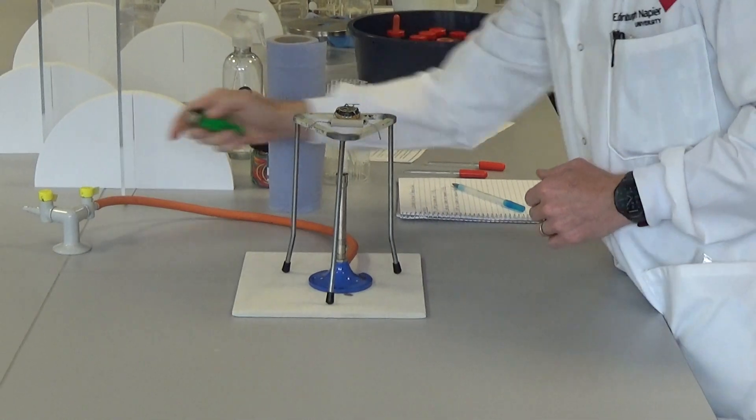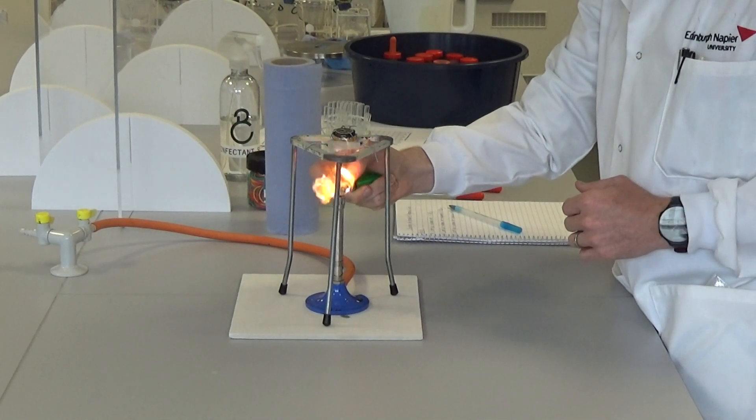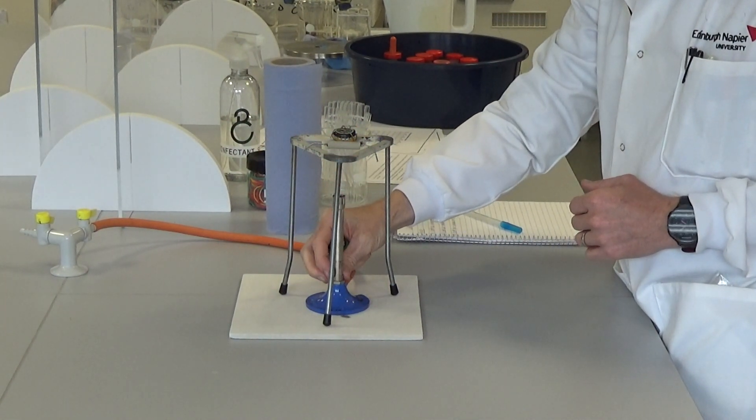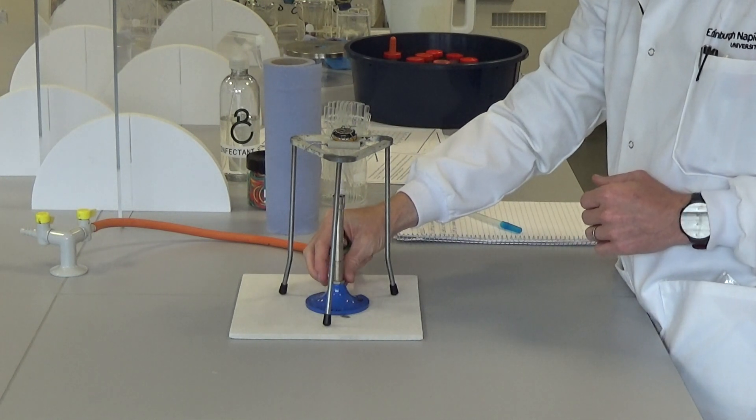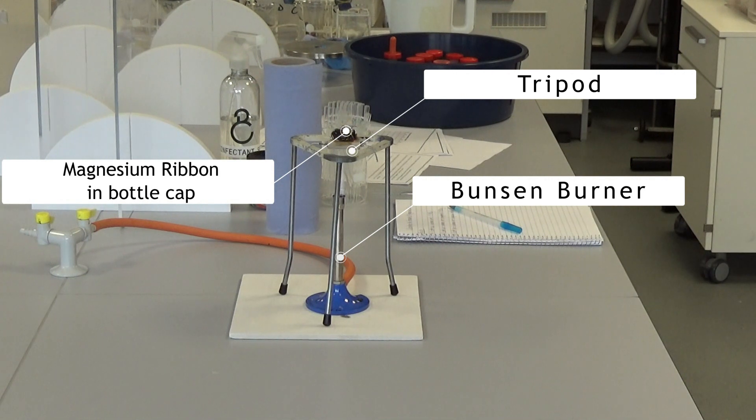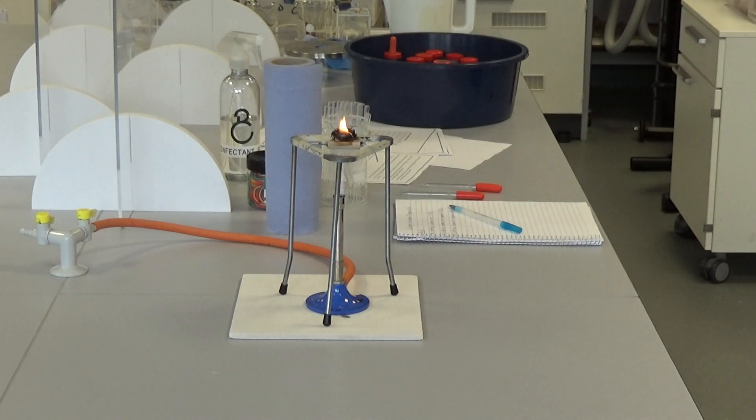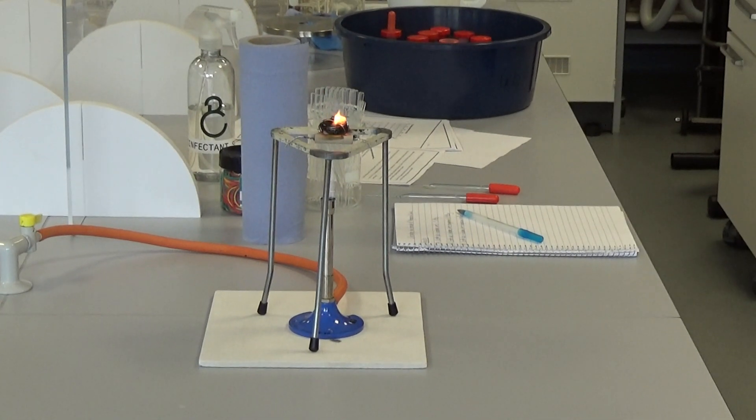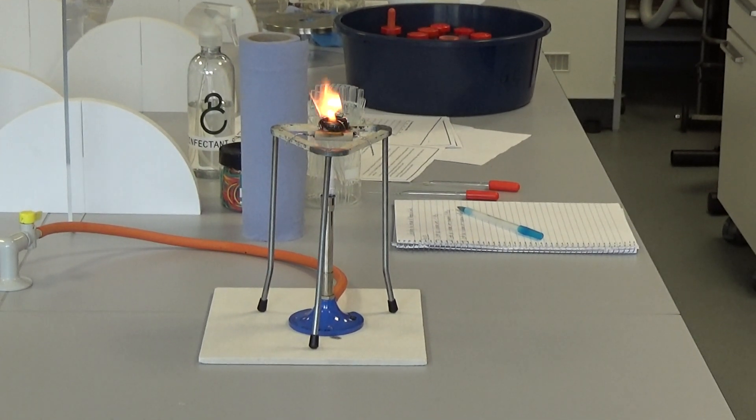So if we turn on the Bunsen, like that, and then we're putting it onto a blue flame, and we'll heat it for approximately 5 minutes. And we should see the magnesium light as it reacts with the oxygen in the air. We'll possibly see the glow through the bottle tops. It probably will go bright at some point as the magnesium catches fire.